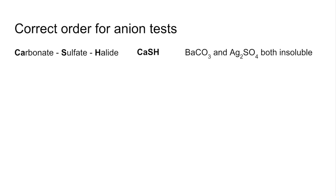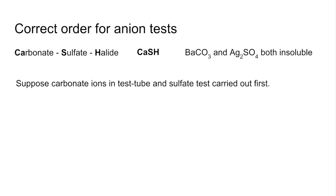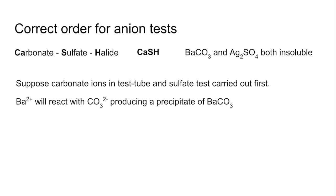For example, suppose you had carbonate ions in your test tube but did the sulphate test first. You'd add barium ions, and barium ions can react with carbonate ions to give a precipitate of barium carbonate. So if you carry out a sulphate test and get a precipitate, you'd think you had sulphate ions — whereas you actually have carbonate ions.